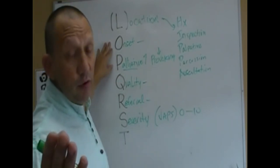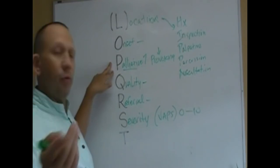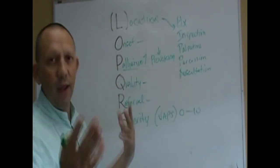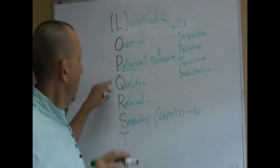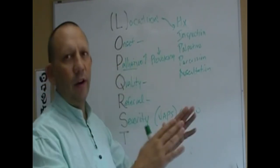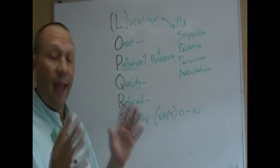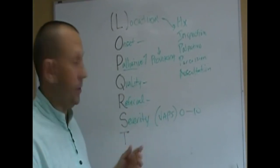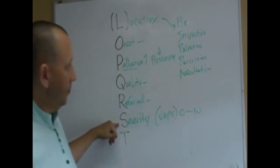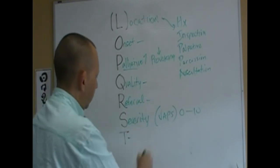All of these are really subjective. The onset they're going to tell you, you don't know, you weren't with them. What makes it better and worse, you can poke around, do some inspection, palpation, percussion, maybe find where it's worse. Quality of pain, totally subjective. There's no way to know unless someone tells you. It's important to put it into words. Referral pain, where does it go? Severity, same thing.